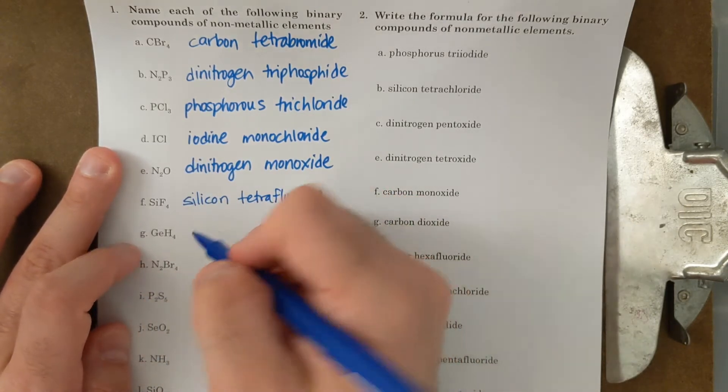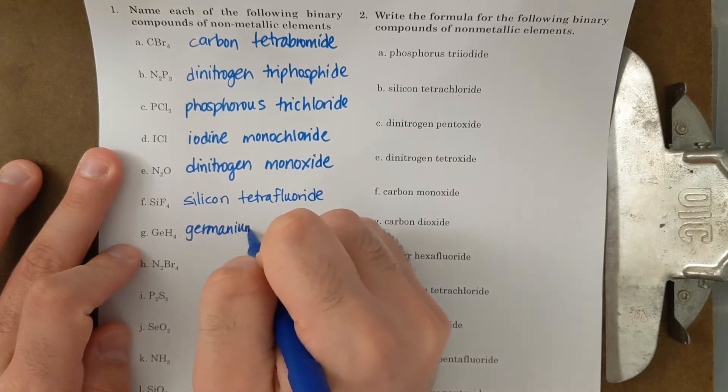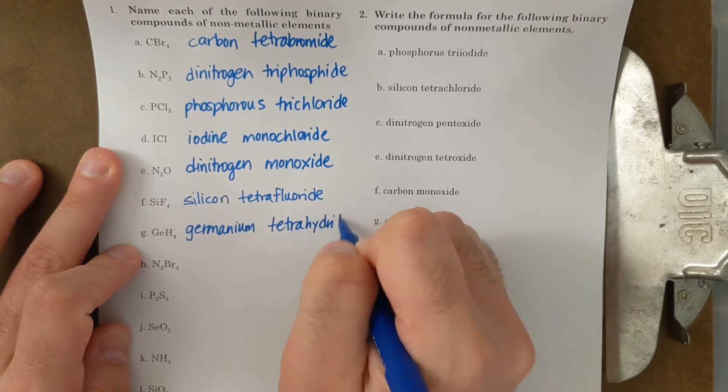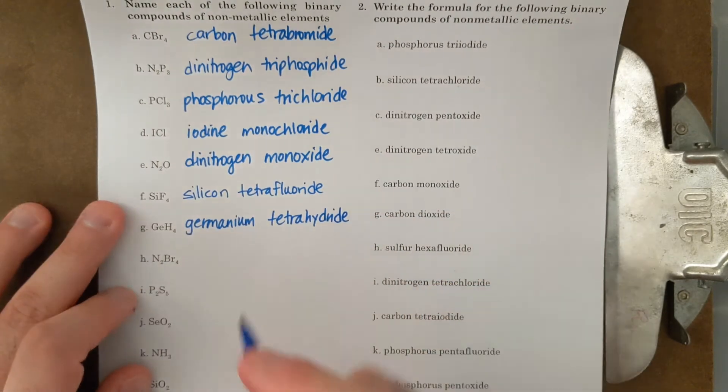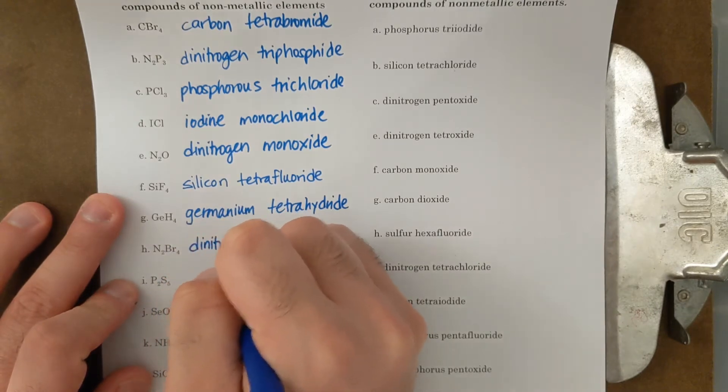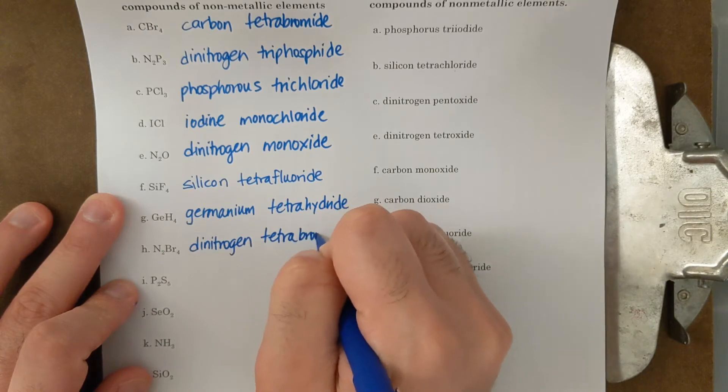GeH4, germanium tetrahydride. N2Br4, dinitrogen tetrabromide. And a lot of these we could just rifle through.